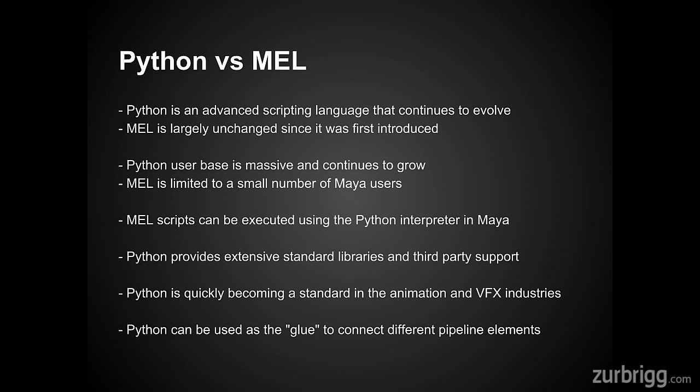There are a very large number of legacy Mel scripts that exist to this day. They're very useful, and there is little need to rewrite them in order to make them work with Python, since Mel scripts can be executed directly from the Python interpreter inside of Maya. Additional benefits to using Python include the extensive standard libraries and third-party support — many tasks you'll need to accomplish will already have code developed, tested, and debugged that you can leverage in your tools.